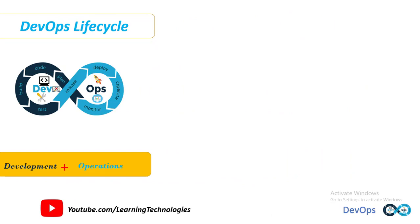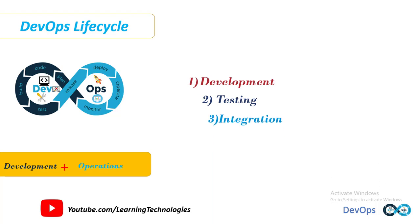Now we will learn about the DevOps lifecycle. DevOps is a deep integration between development and operations. Understanding DevOps is not possible without knowing the DevOps lifecycle. There are different stages in DevOps: 1. Development. 2. Testing. 3. Integration. 4. Deployment. 5. Monitoring.